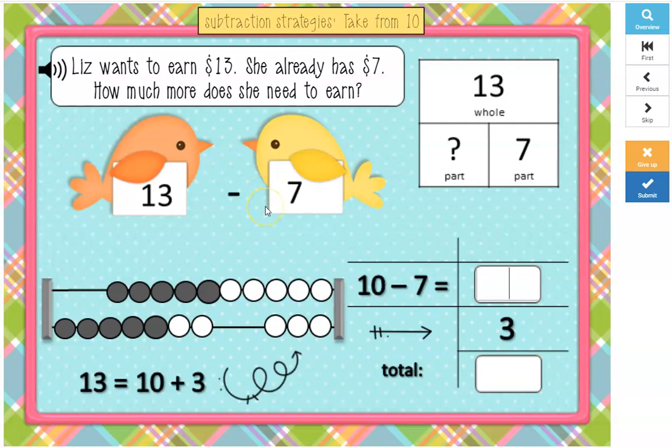This says, Liz wants to earn $13. She already has $7. How much more does she need to earn? So we have our numbers, our part-part-whole diagram, and our beads here.